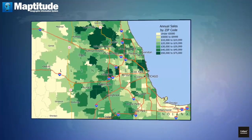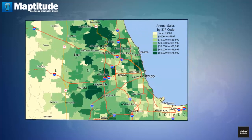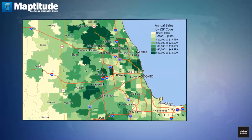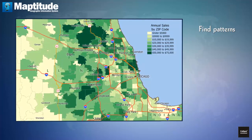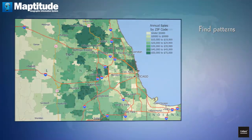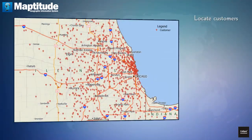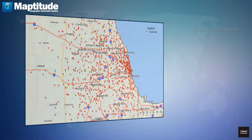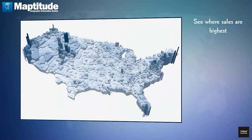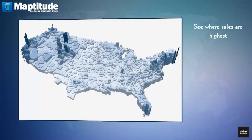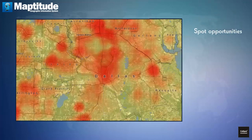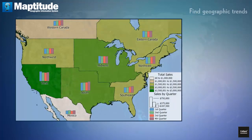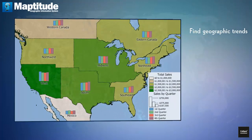Maptitude mapping software unlocks the trends hidden in your data and gives you the tools to understand how geography affects your business and to visualize those hidden patterns. Know exactly where your customers are, see where sales are highest, find over and under served areas, and spot geographic trends.